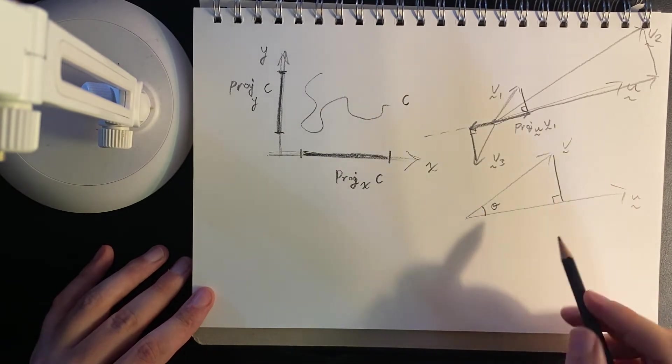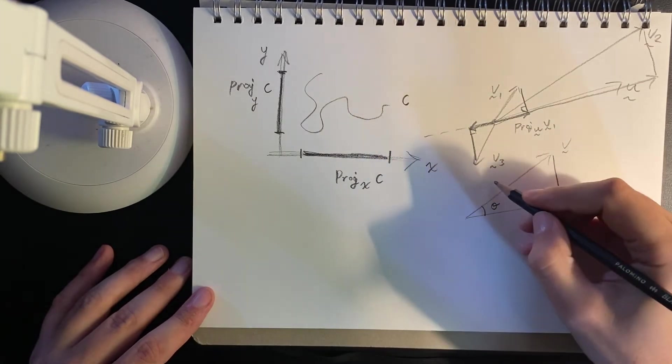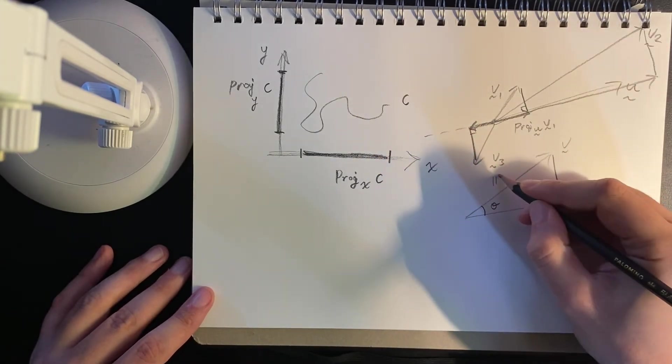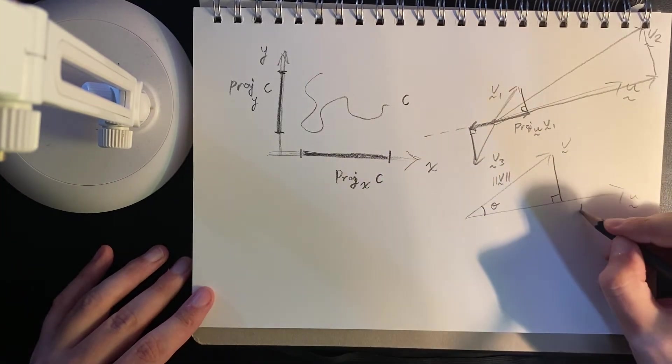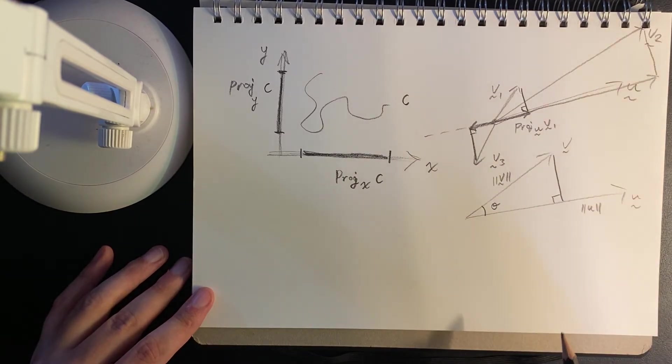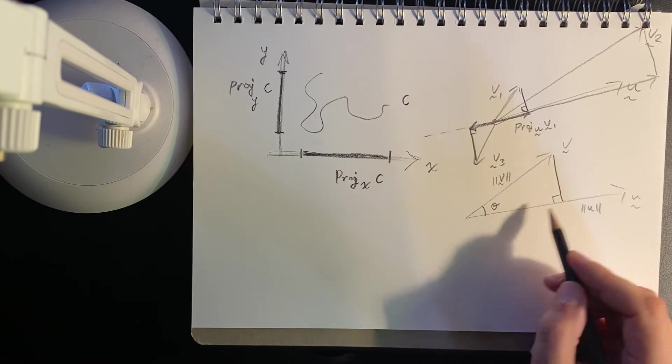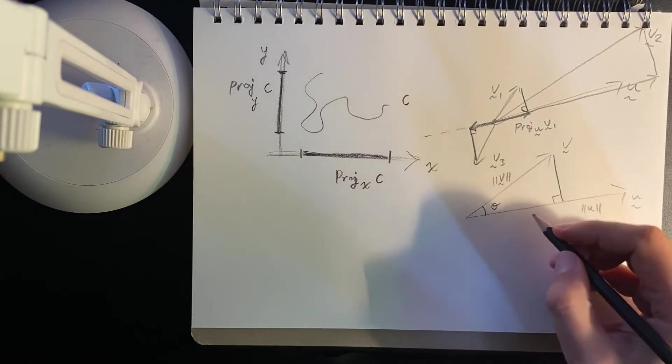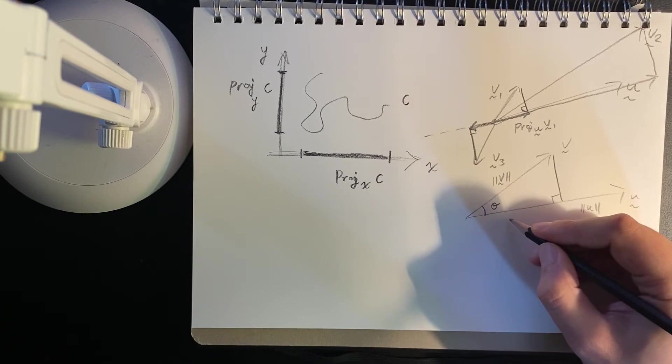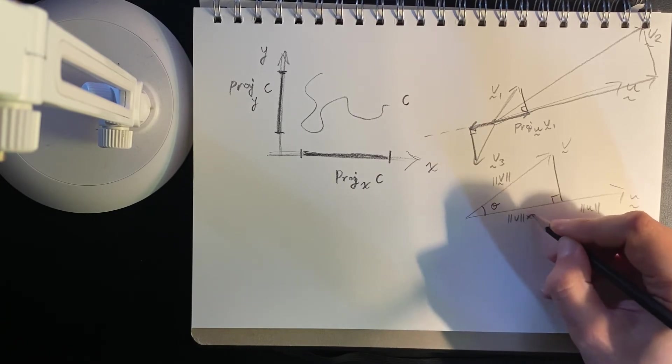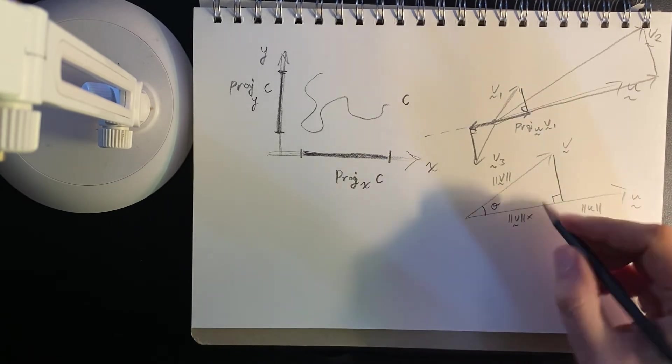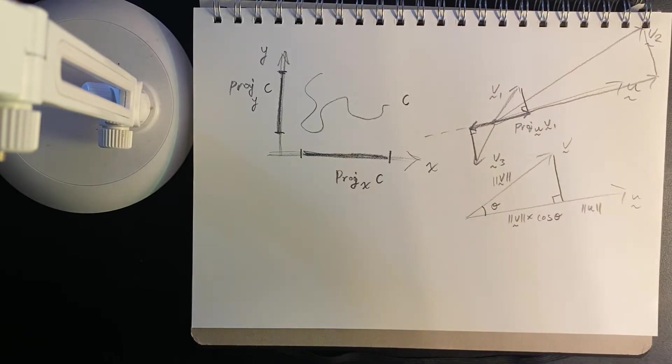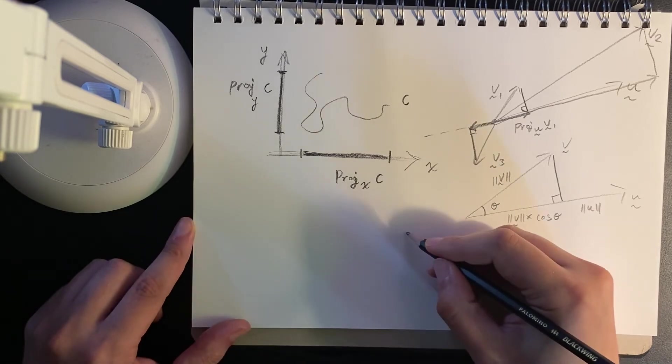So we want to get this length. This bit here has the length of v, and this whole length here is the length of u. Okay, so I guess it doesn't matter, does it? But anyway, we want to get this length. So this is by trigonometry. We have the hypotenuse as a length of v, and we want to multiply this by cosine theta. That's the length there.